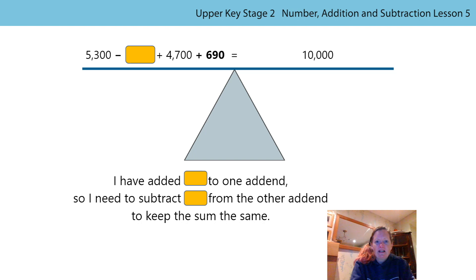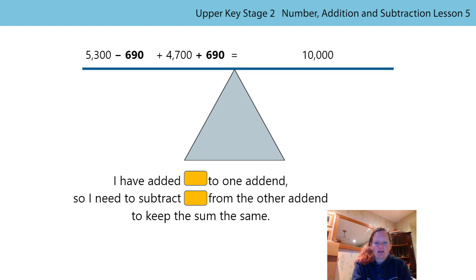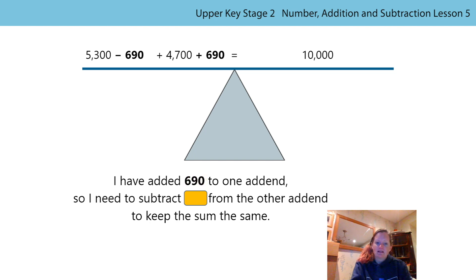What about this one? Pause the video, have a go — say the calculation out loud and the stem sentence. Did you notice? We added 690 to one addend, so therefore we must have subtracted 690 from the other addend so that we could keep the balance level and the sum the same. Say the stem sentence with me: I have added 690 to one addend, so I need to subtract 690 from the other addend to keep the sum the same.